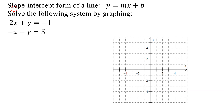So let's have a look. Here's the slope-intercept form of the line. It's y equals mx plus b, where m, the coefficient of x, is the slope, and b is the y-coordinate of the y-intercept.